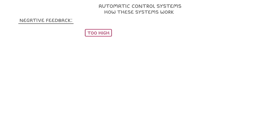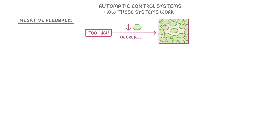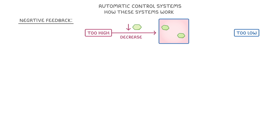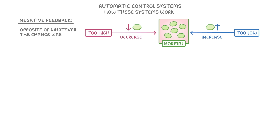So we've now looked at the different components of the automatic control systems and also how they communicate with each other. The last thing we need to consider is how these systems actually work in real life. The mechanism is called negative feedback, and it's actually pretty simple once you understand it. Basically, whenever the level of something gets too high, like the level of glucose in our blood, negative feedback acts to decrease it again to return it to normal. But if the glucose gets decreased too much and the level is now too low, negative feedback will just increase it again — so it basically just does the opposite of whatever the change was.